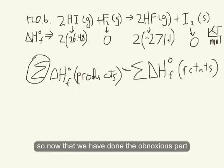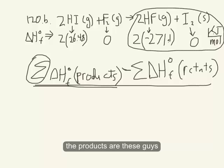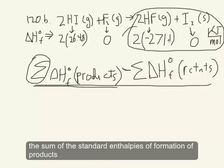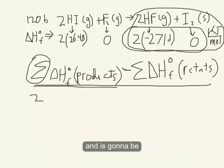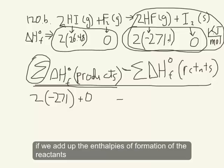So now that we've done the obnoxious part, we can use the equation. The products are these guys. So the sum of the standard enthalpies of formation of the products are just going to be this plus zero, and if we add up the enthalpies of formation of the reactants,